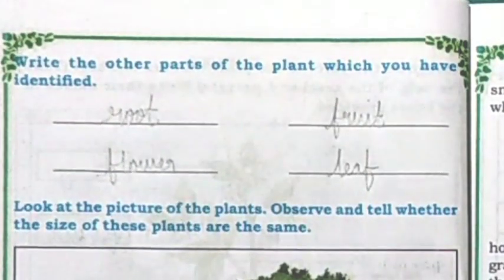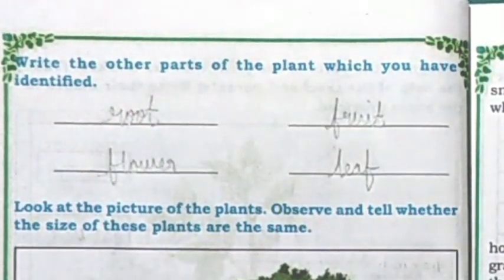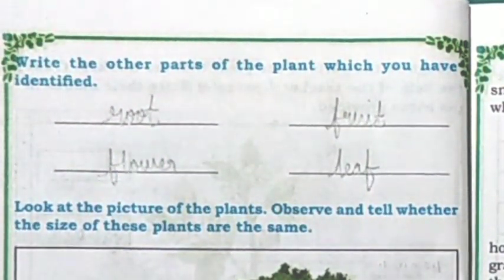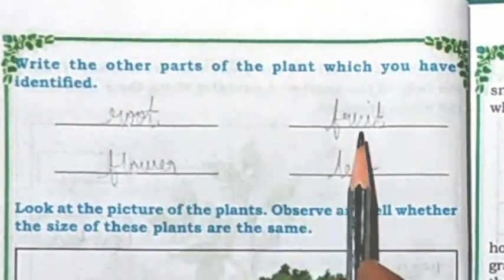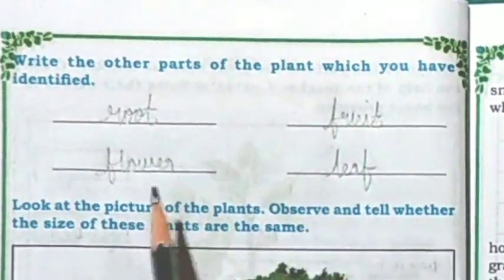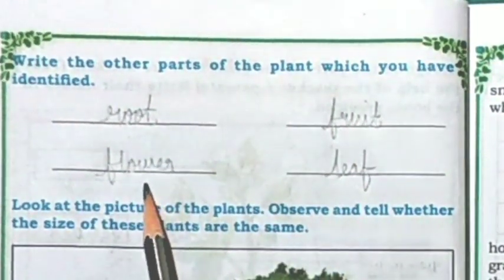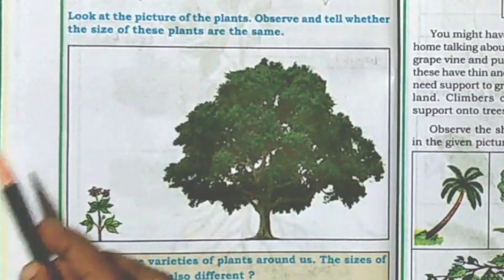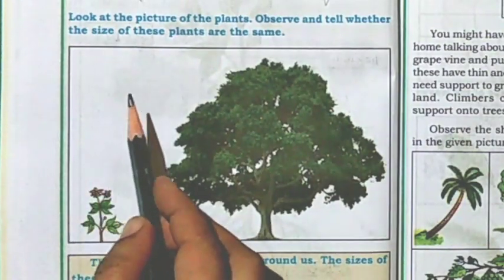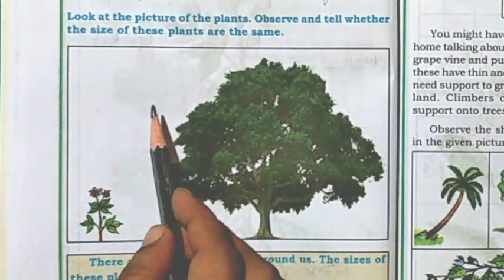Write the other parts of the plant which you have identified. Root, fruit, flower, leaf. Look at the picture of the plants.